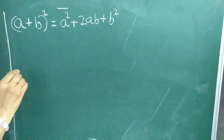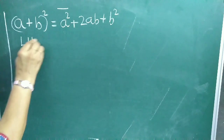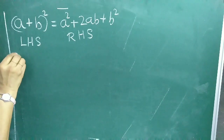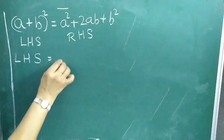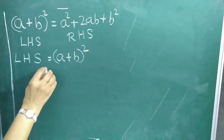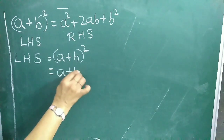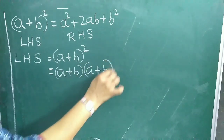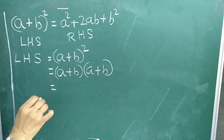This is an equality with two parts: the LHS part and the RHS part. First we consider the LHS part. We know LHS = (a + b)², and this can be written as (a + b) × (a + b). Now we multiply these expressions.